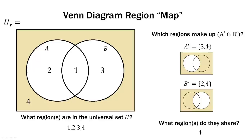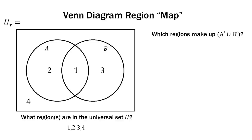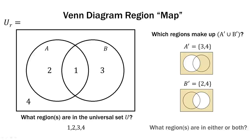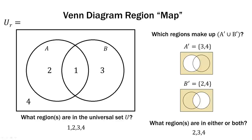Similarly, not A union not B: not A is 3 and 4, not B is 2 and 4. Now we're doing a union, so what regions are in either one or both? That's 2, 3, and 4. Notice there is no 1 in not A and no 1 in not B, therefore it's not part of the union. Only regions 2, 3, and 4 are part of this union.